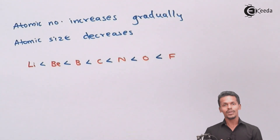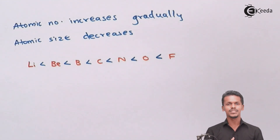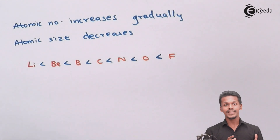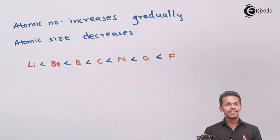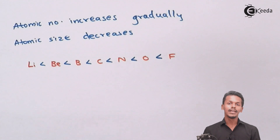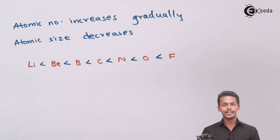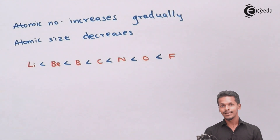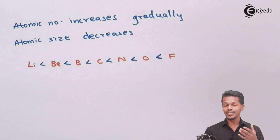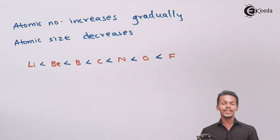I have not mentioned noble gases like neon, because noble gases do not form bonds with other elements easily. Since they don't normally form bonds, the question of electronegativity doesn't arise for them. That is why, despite neon being at the extreme right of the period, its electronegativity is not considered. Fluorine remains the most electronegative element in the whole periodic table.